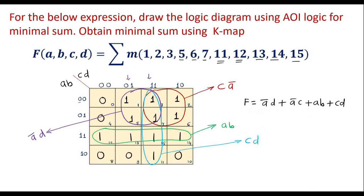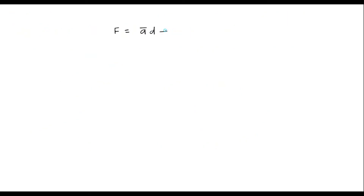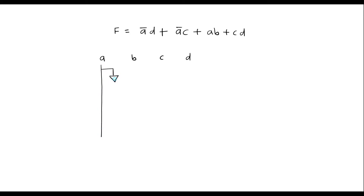This is the simplified expression. It is also required to draw the logic diagram using AOI. Let me rewrite the function: F equals A bar D plus A bar C plus AB plus CD. The inputs are A, B, C, and D. Since we have A bar, I will take one line and use one inverter here; the value at the output is A bar.